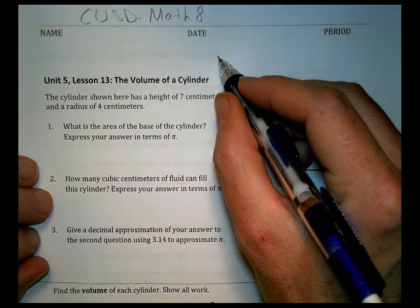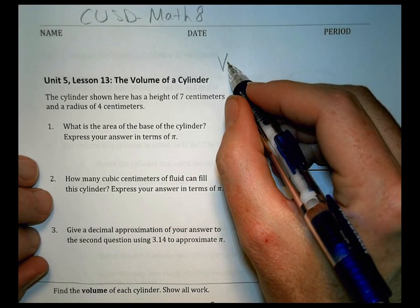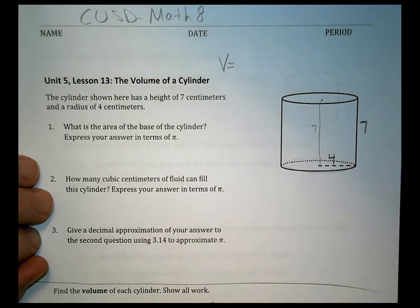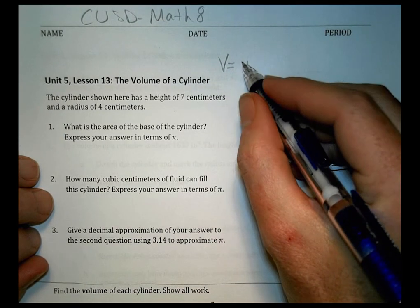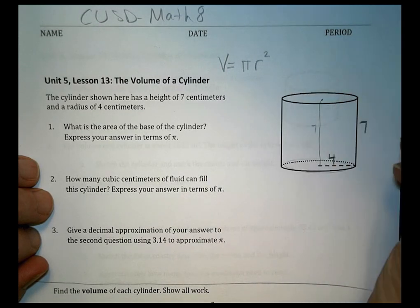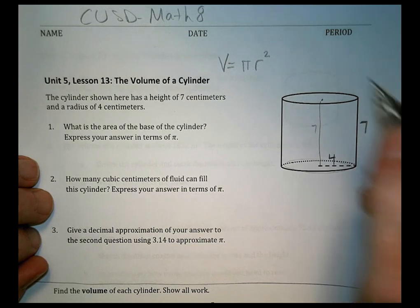In your notes today, you should have discussed that the volume of a cylinder is going to be the area of the base. Now this is a circle, so the area of a circle is found by doing pi radius squared, pi r squared, that's how you find the area of a circle.